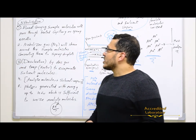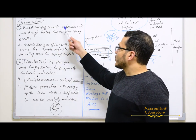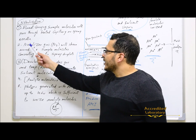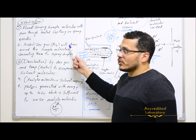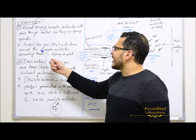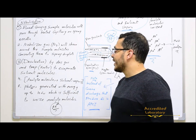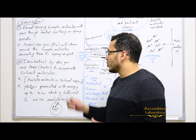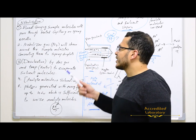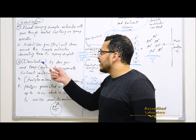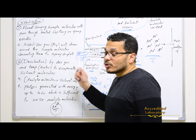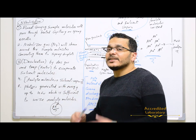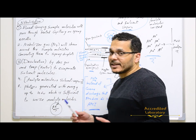In that process, the eluent carrying sample molecules will pass through the heated capillary or spray needle. Then the nebulizer gas, which is nitrogen, shears around the eluent carrying sample molecules, converting them to spray droplets which consist of sample molecules surrounded by the solvent molecules. Then the desolvation process, using desolvation vaporization gas and temperature from the heater, evaporates the solvent molecules to get the analyte molecules.